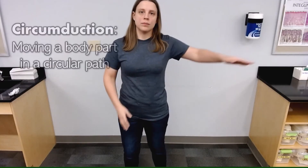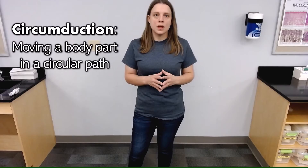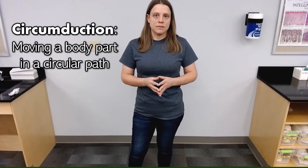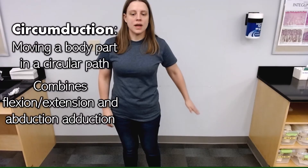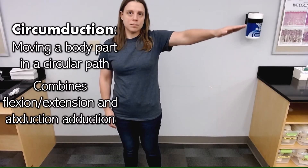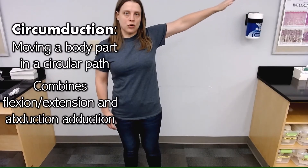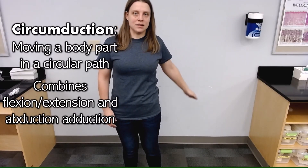Circumduction, on the other hand, is when you're drawing a circle in the air with a body part. This would be circumduction of the shoulder. It's actually a combination of flexion and extension, and abduction and adduction. As my arm comes forward, I'm flexing and abducting. And then as I start to go around to the back, I am extending and then adducting.